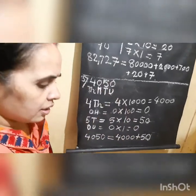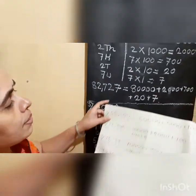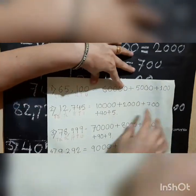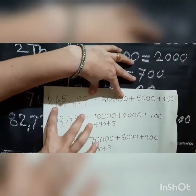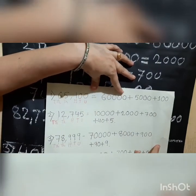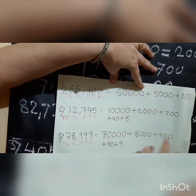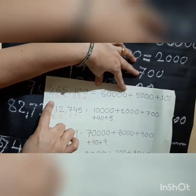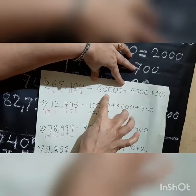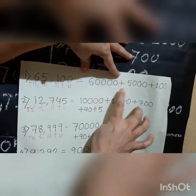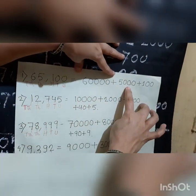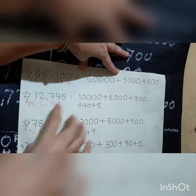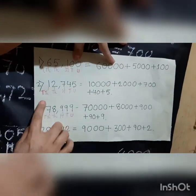Now children, we will see more examples. First one: 65,100. Looking at the place values — ten-thousands, thousands, hundreds — therefore the expanded form is 60,000 plus 5,000 plus 100.